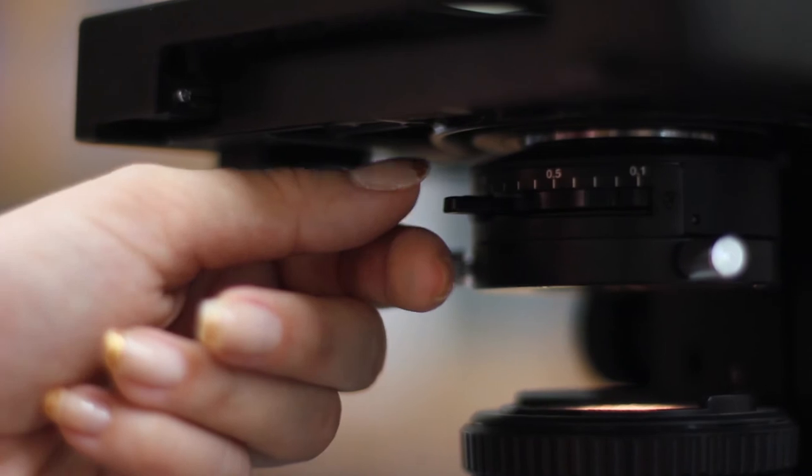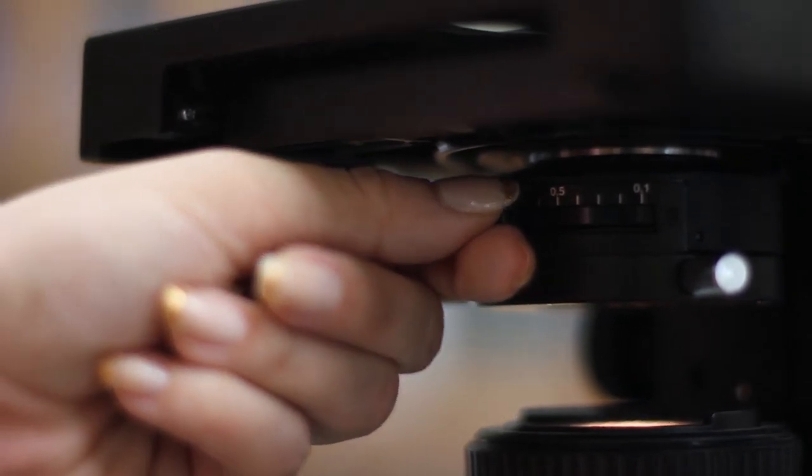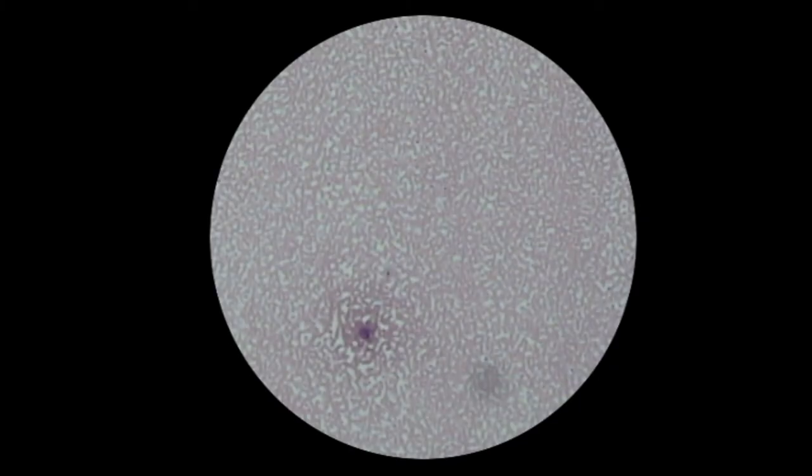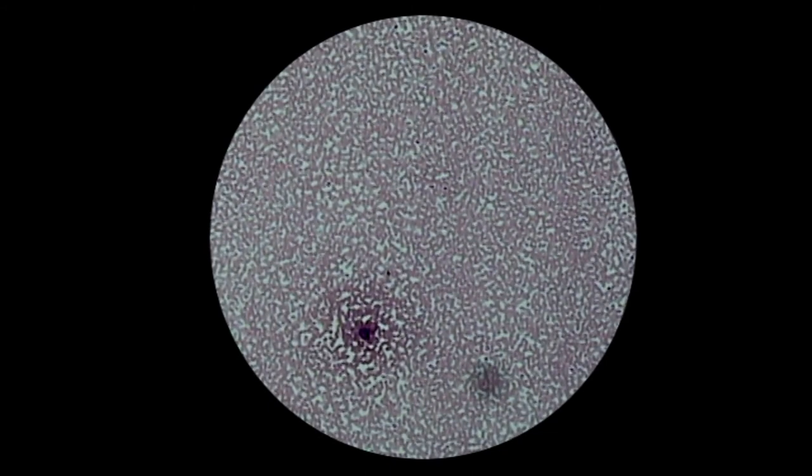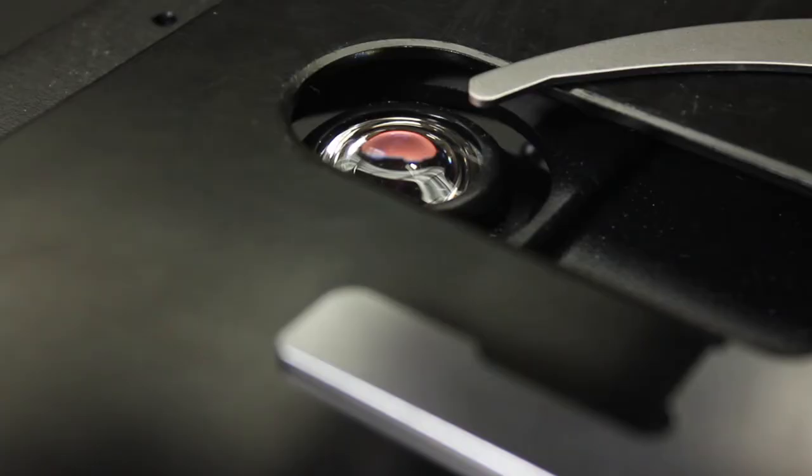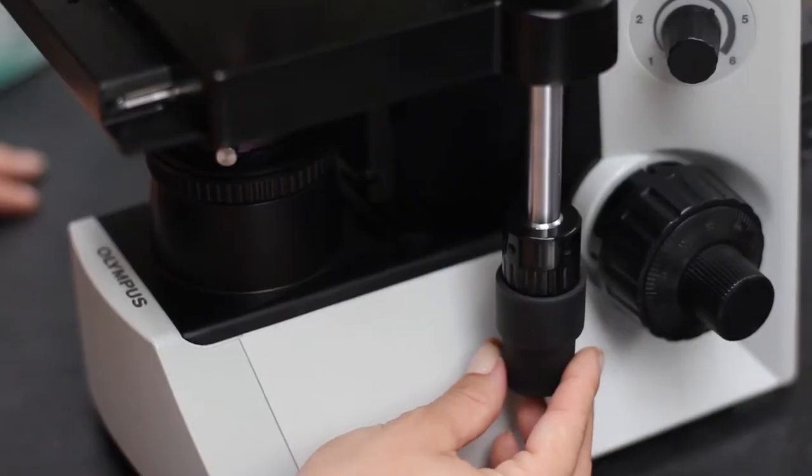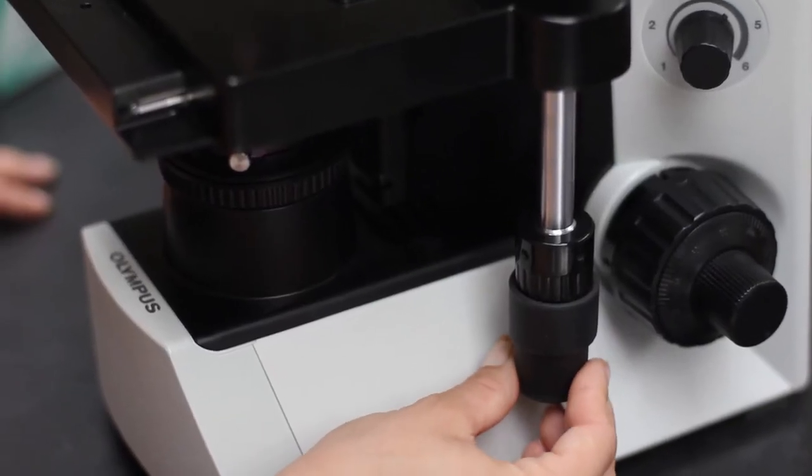If more contrast is desired, adjust the aperture iris diaphragm. As you increase in magnification power, the light will appear less intense. Increase the light intensity as necessary. You may need to adjust the x and y axis of the slide.